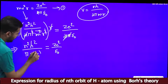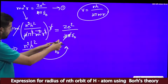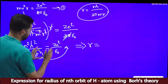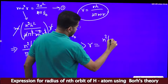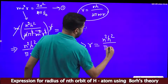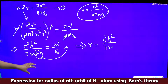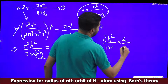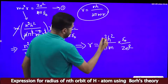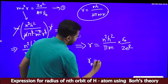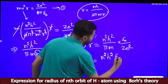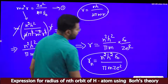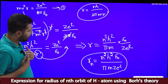Rearranging to solve for R: we bring r to one side and Ze²/ε₀ to the other side. This gives R_n = n²h²ε₀/(πmZe²). This is the expression for the radius of the electron in the nth orbit of the hydrogen atom.